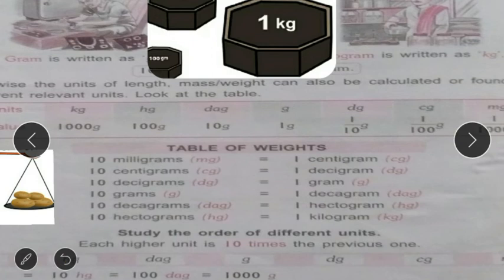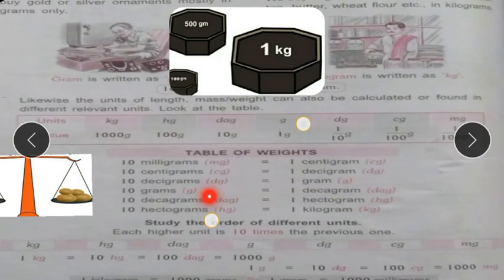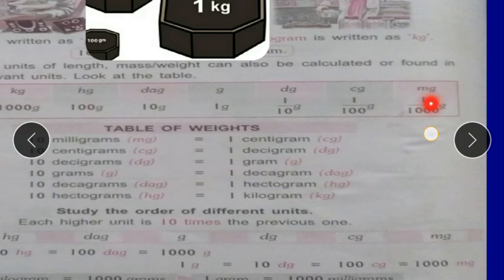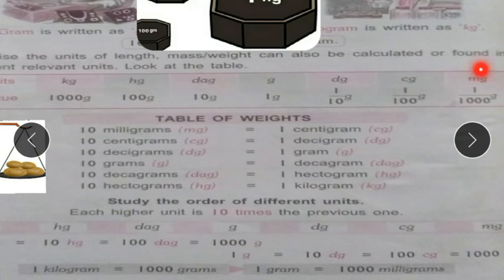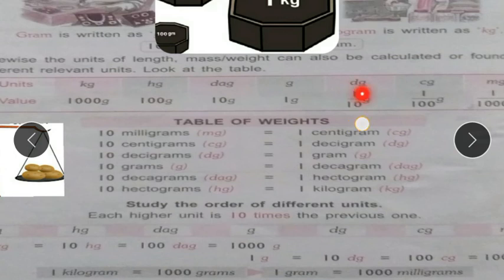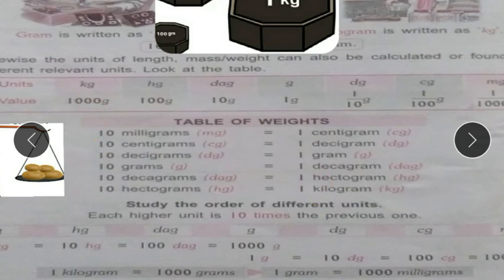Table of weights: 10 milligrams equals 1 centigram; 10 centigrams equals 1 decigram; 10 decigrams equals 1 gram; 10 grams equals 1 decagram; 10 decagrams equals 1 hectogram; 10 hectograms equals 1 kilogram. We move by 10 units at each step.